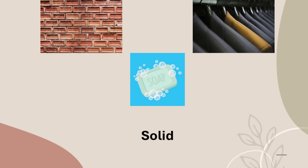Let us discuss each of these states in detail. Solids have a fixed shape. For example, the chair you're sitting on or the table you're writing on is a solid object — it has a fixed shape. You cannot change its shape even if you press it hard or try to move it from one place to another.